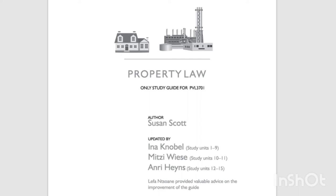Study Unit 1.3: Function of the Law of Things. The function of the Law of Things can be summarized as follows. First, it strives to harmonize or regulate various competing ownership rights, especially between neighbouring owners. Secondly, it strives to harmonize or regulate an owner's rights in regard to his or her thing, with the rights of other limited real right holders to the same thing. Thirdly, it controls the acquisition, protection and extinction of things and real rights.